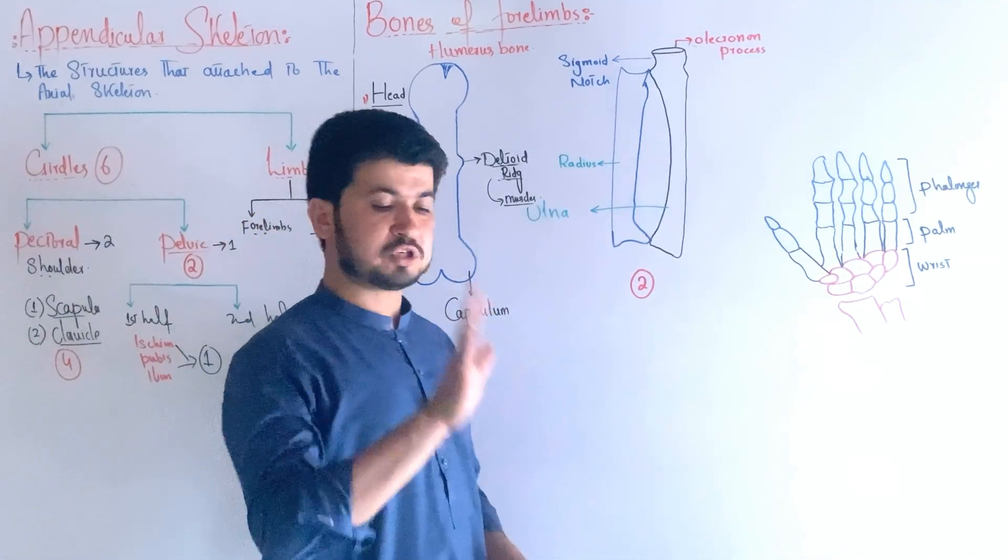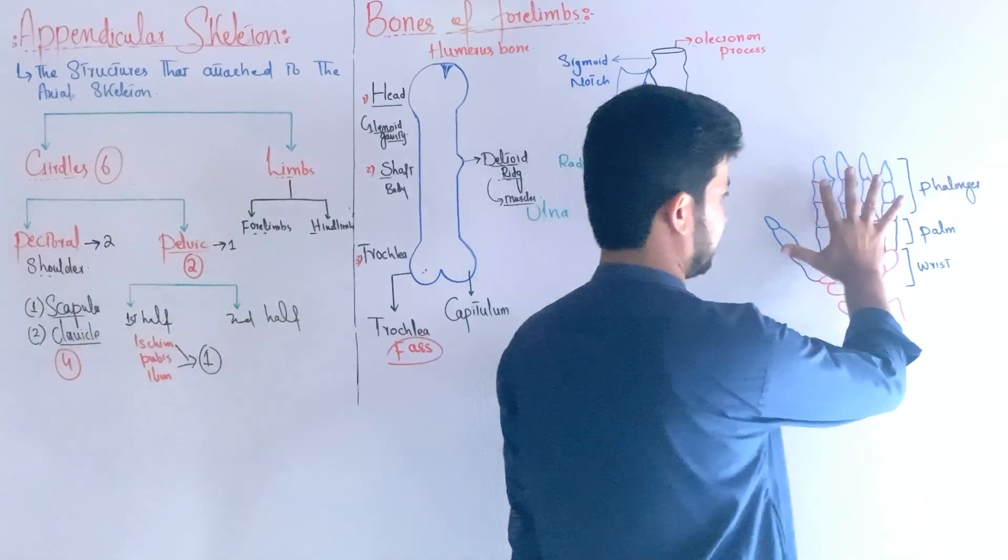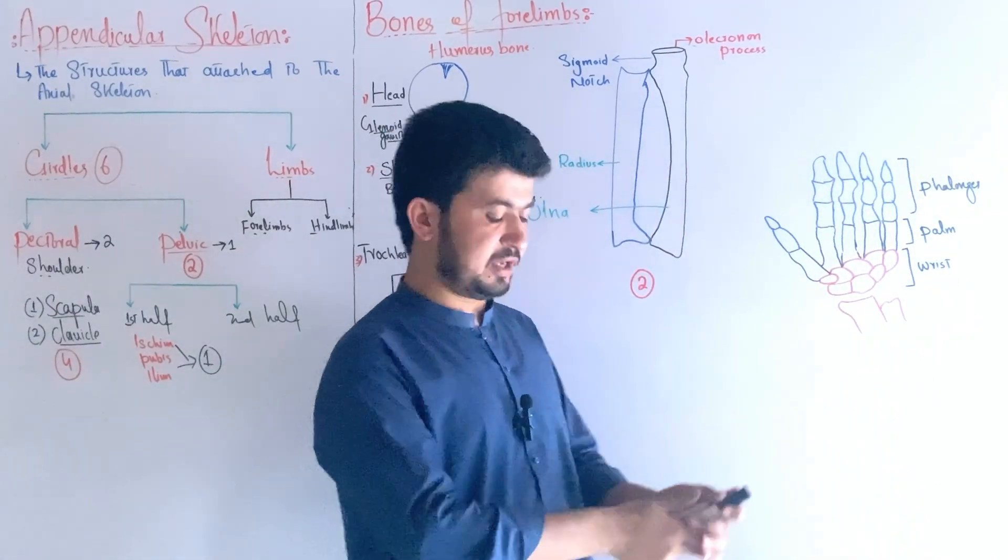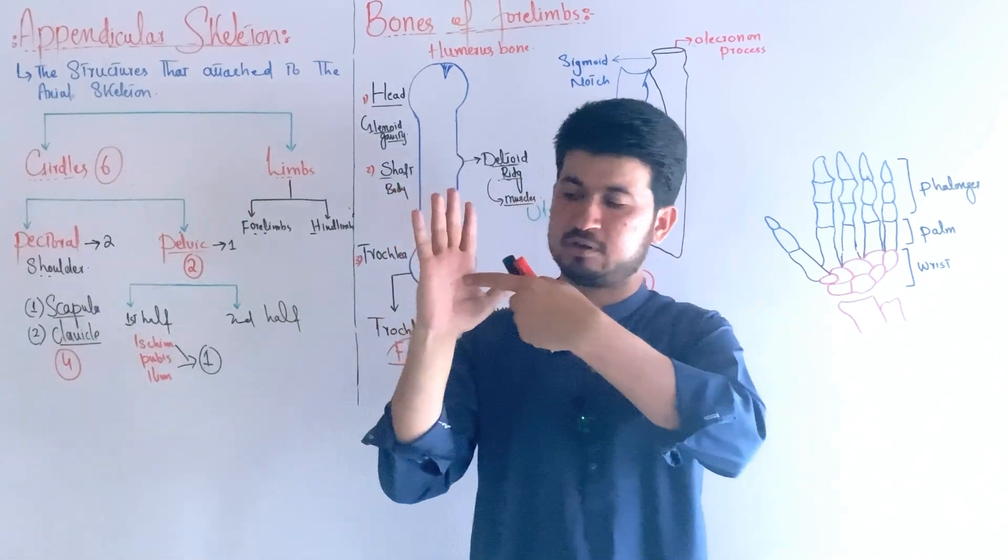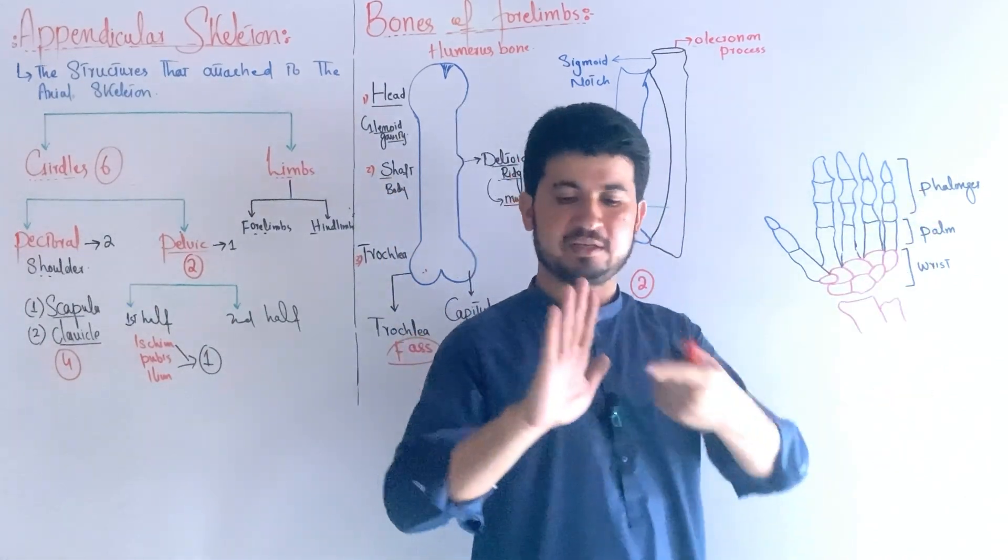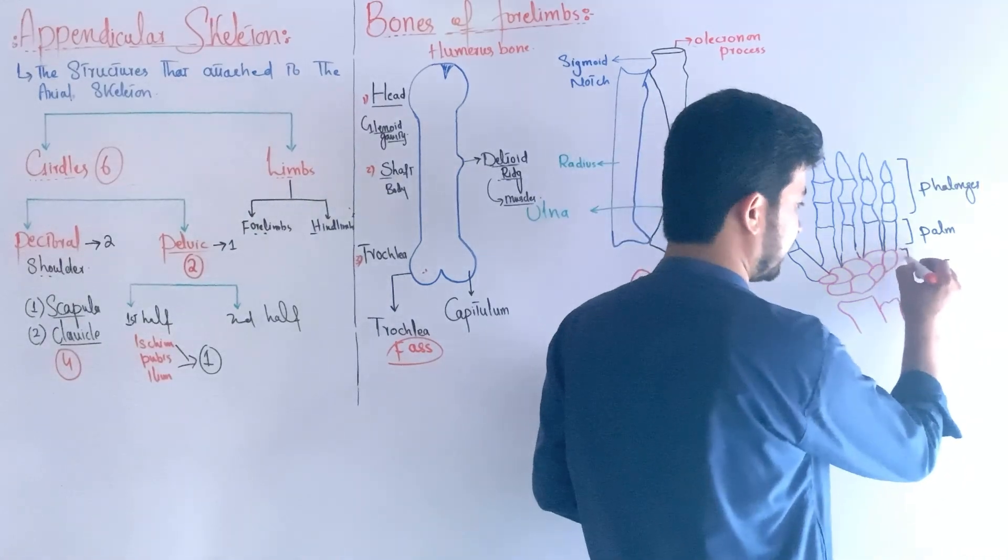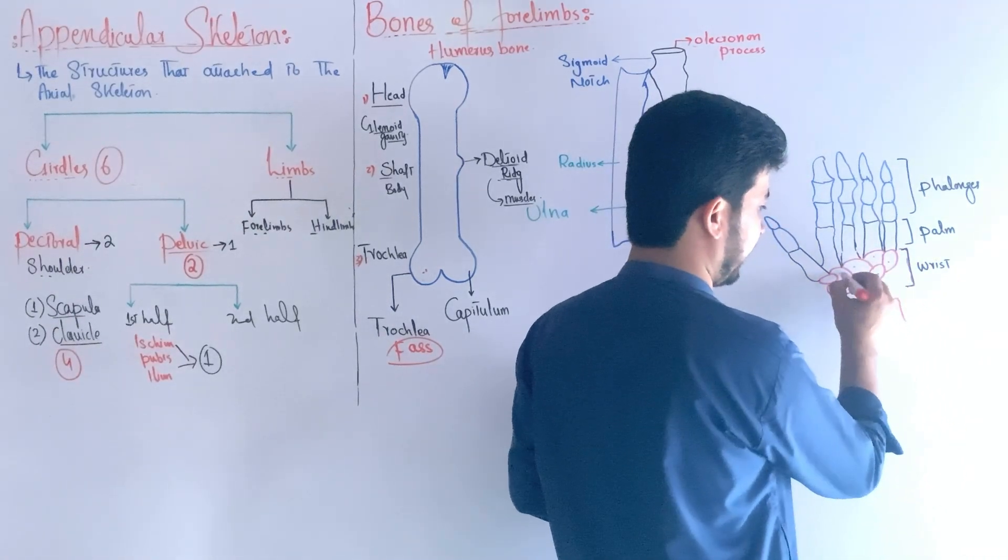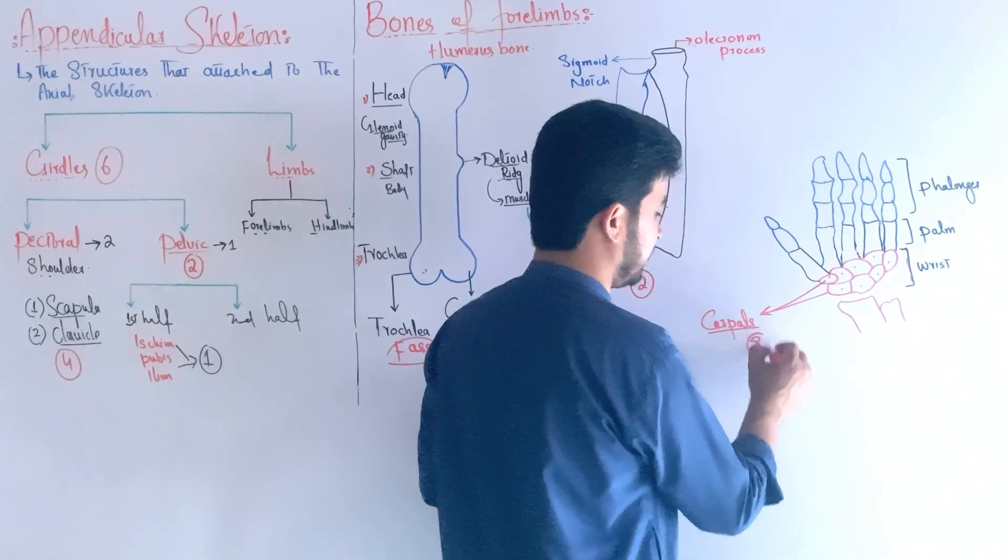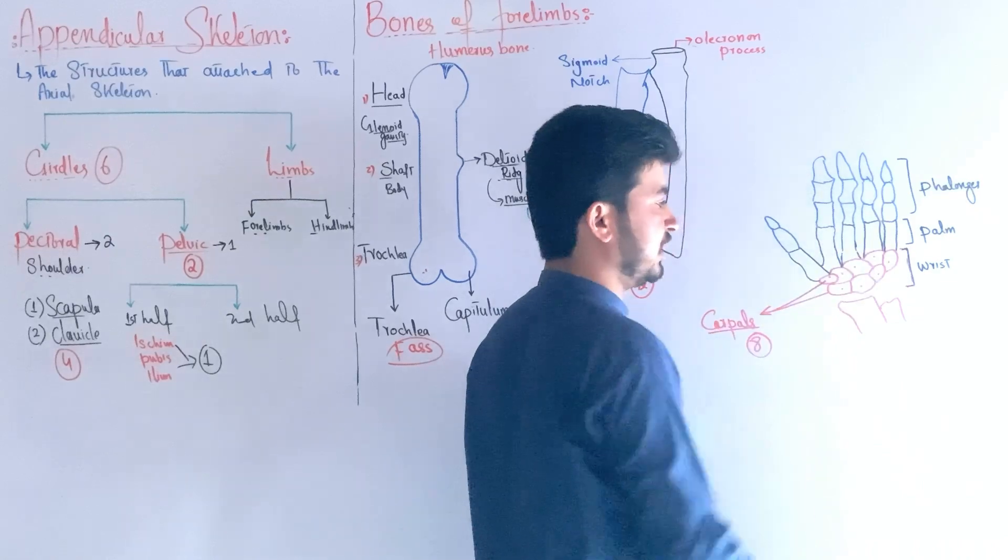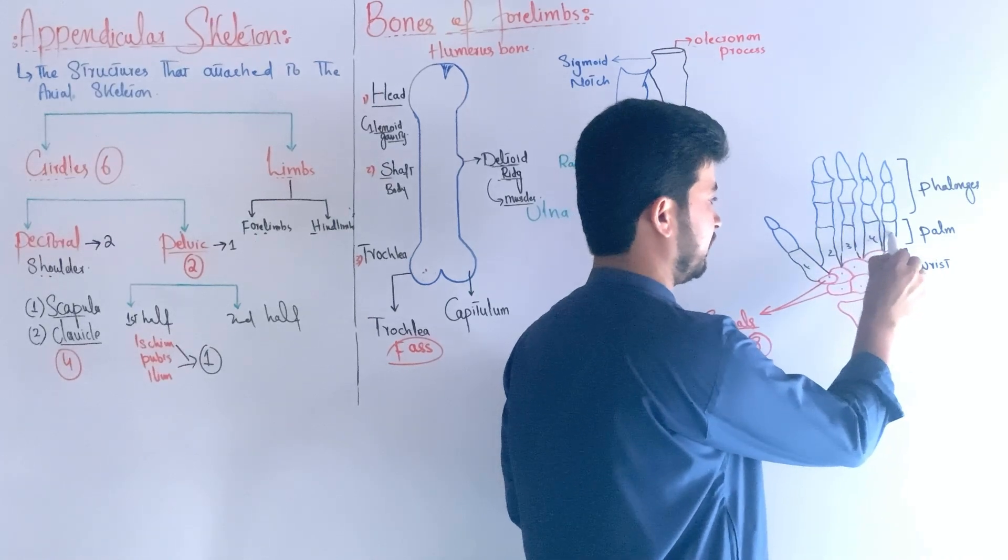The hand has bone structures divided into three parts - the wrist region called carpals, the palm region called metacarpals, and the fingers called phalanges. The wrist region has eight bones called carpals arranged in two rows. The palm region has five bones called metacarpals - one, two, three, four, and five.